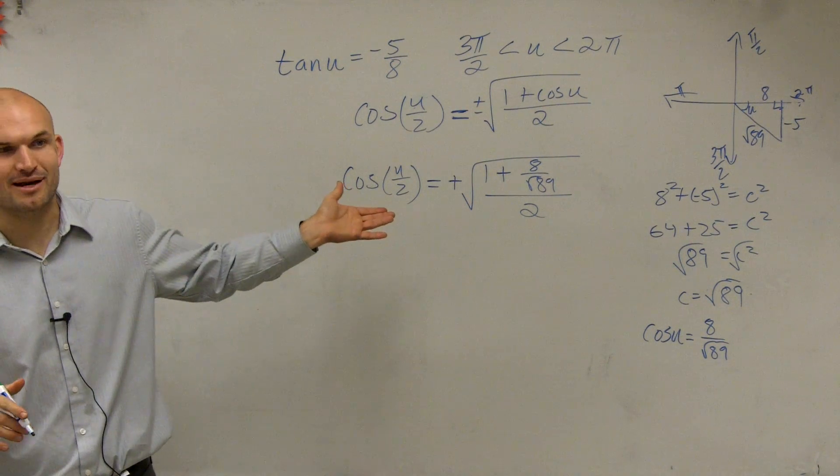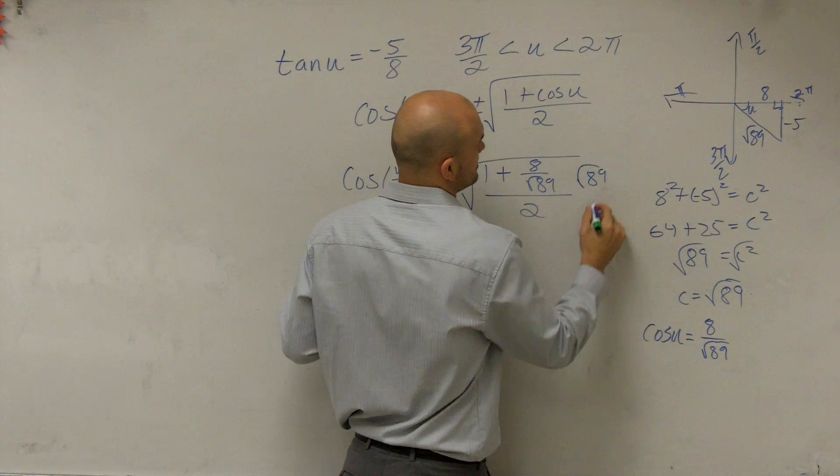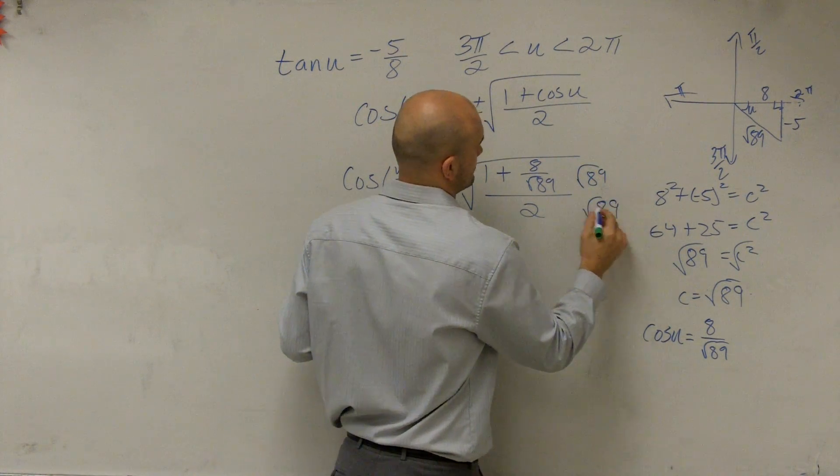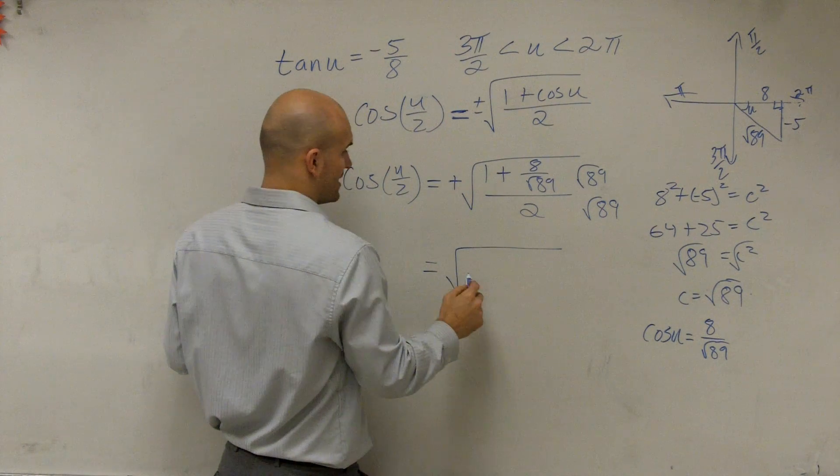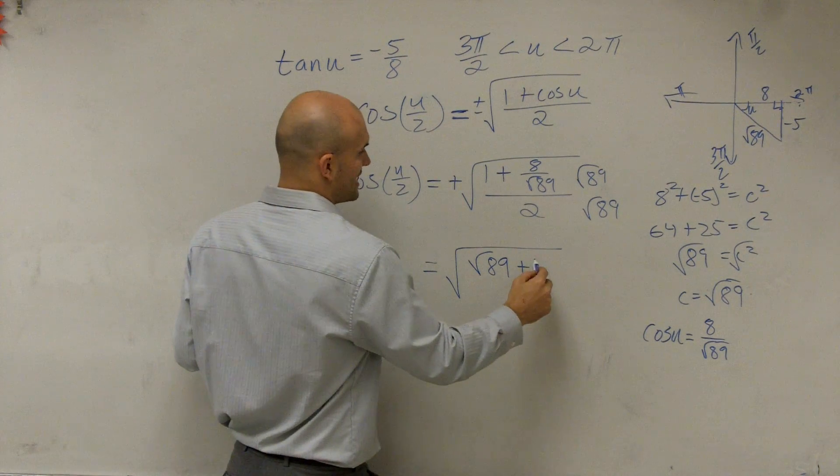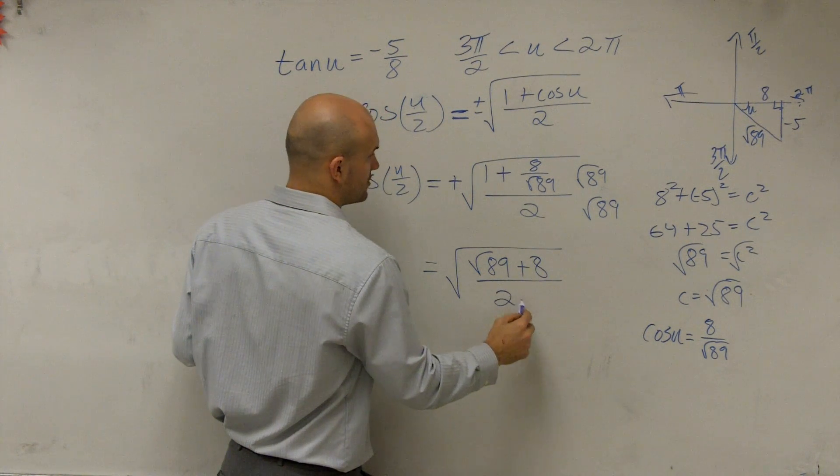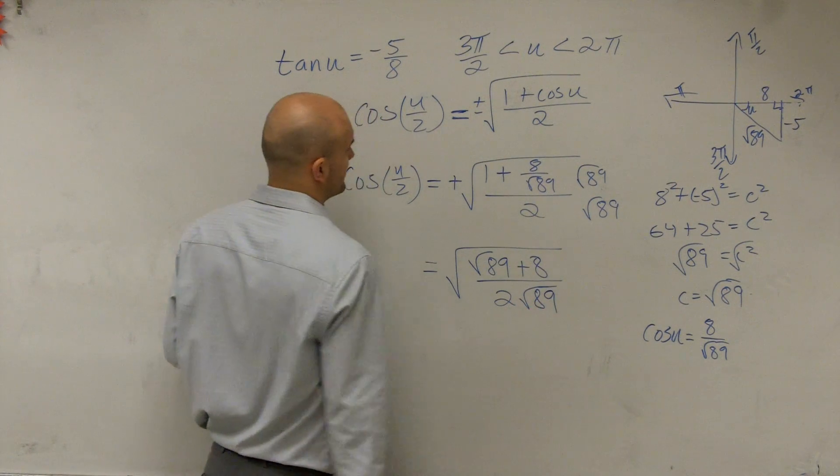Now, we've got to get that square root off the bottom, right? So let's multiply by the square root of 89 on the top and the bottom. So therefore, I'm going to be left with the square root of 89 plus 8 divided by 2 square root of 89.